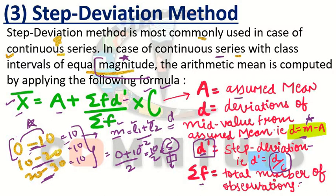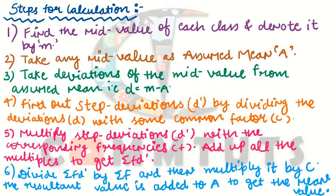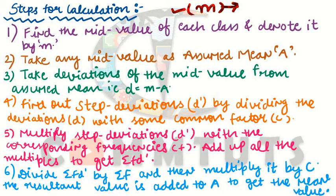After that, Σf is the total number of observations and X̄ is your arithmetic mean. That is your step deviation method. Now let us understand the steps for calculation under this method. Whenever you have a continuous series, the first step is to calculate the mid values of each class — whether you apply direct method, shortcut method, or step deviation method. The first step is always to calculate mid values.